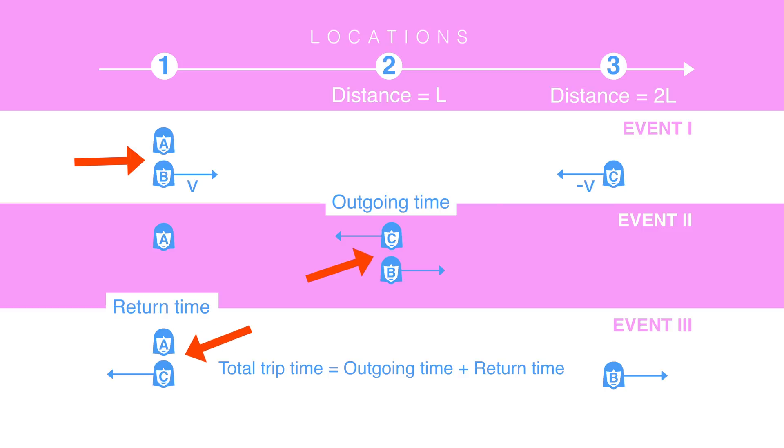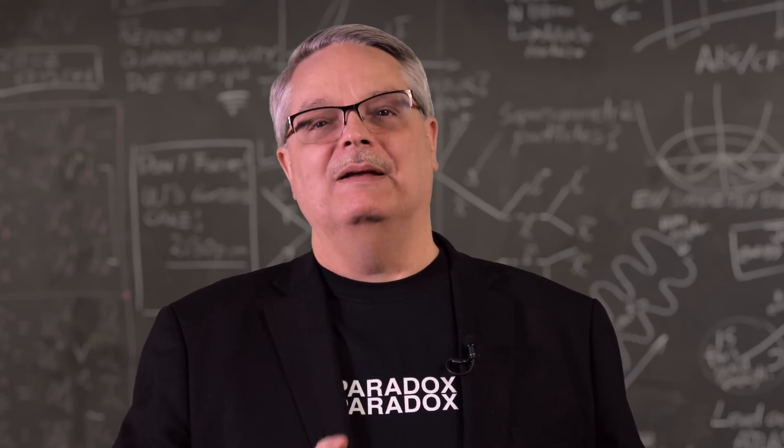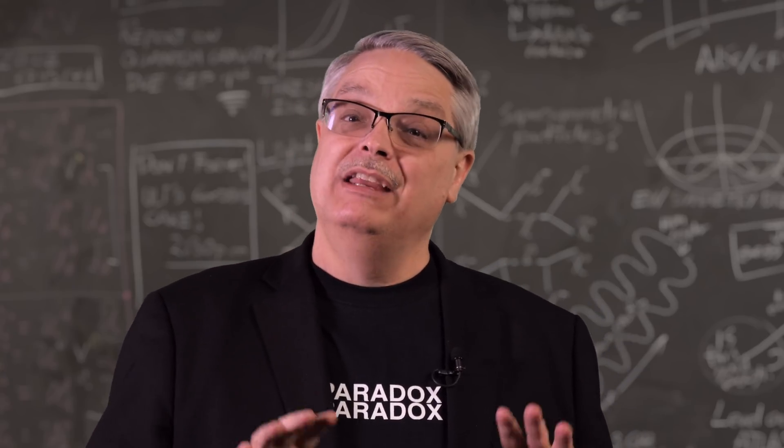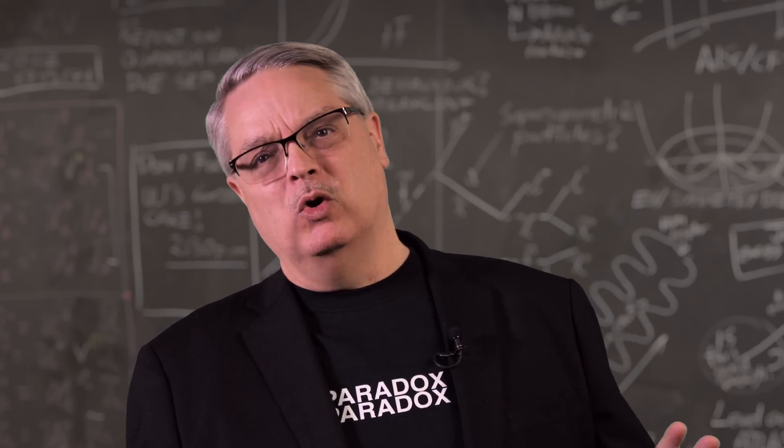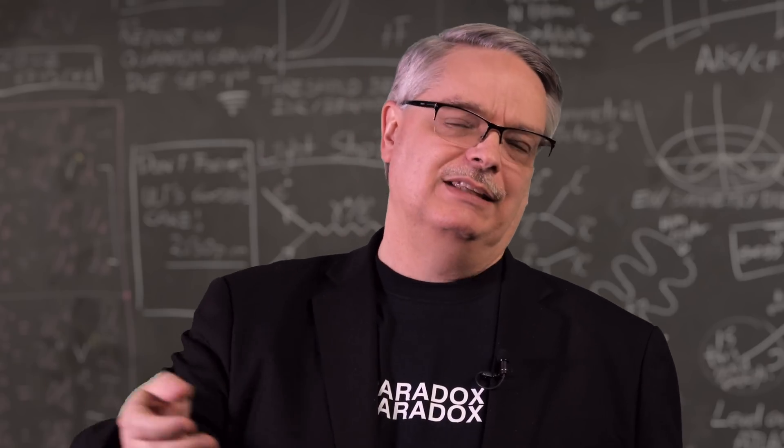Remember that location two is a distance L away from observer A and that, at least as far as observer A is concerned, observer B is moving to the right at velocity v. Thus, observer A would say it took a time equal to the distance divided by the velocity, or L over v, for observer B to get to the meeting point. Okay, I'm going to do some math here. If math isn't your thing, just let it roll over you and I'll get to the punchline at the end of it.